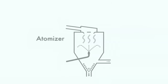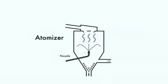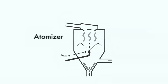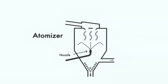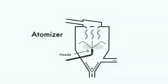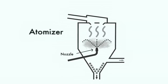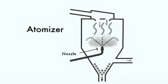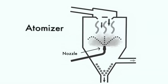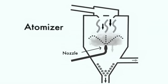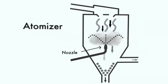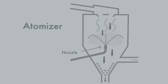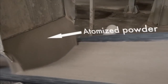The atomizer is equipped with a nozzle. The nozzle sprays the slurry into the middle of a large tank that is fed with a current of hot air. As the slurry becomes airborne, it rapidly dries to form atomized powder.